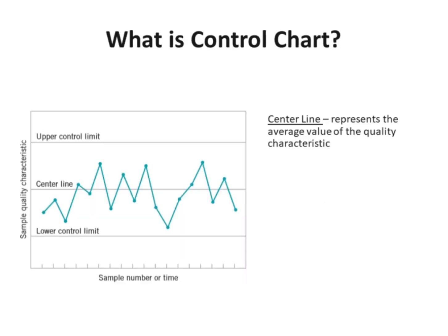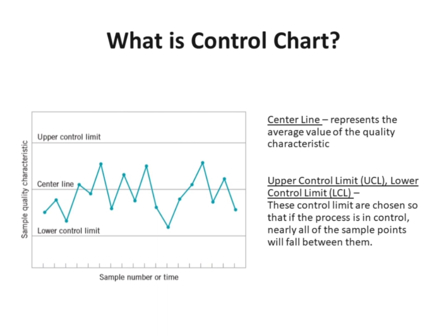A typical control chart is a graphical display of a quality characteristic that has been measured or computed from a sample versus the sample number or time. The chart contains a center line that represents the average value of the quality characteristic corresponding to the in-control state. Two other horizontal lines, called the upper control limit (UCL) and the lower control limit (LCL), are also shown on the chart. These control limits are chosen so that if the process is in control, nearly all of the sample points will fall between them.